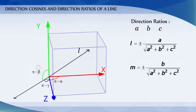M equals plus or minus B divided by the square root of (A squared plus B squared plus C squared), and N equals plus or minus C divided by the square root of (A squared plus B squared plus C squared).